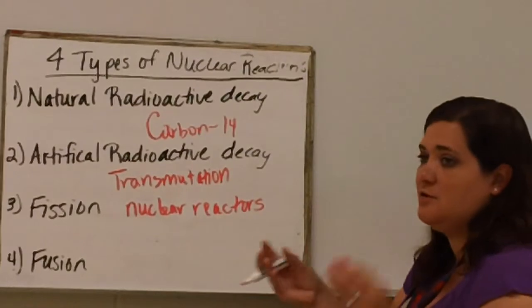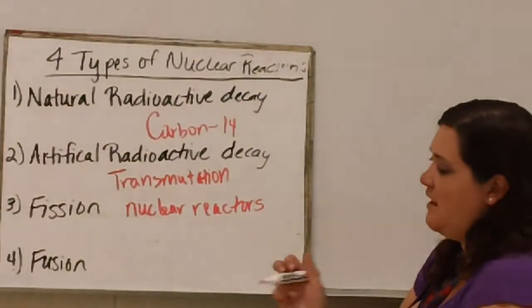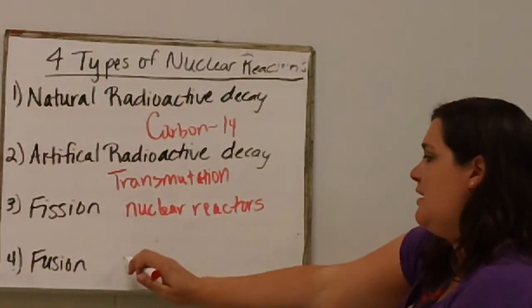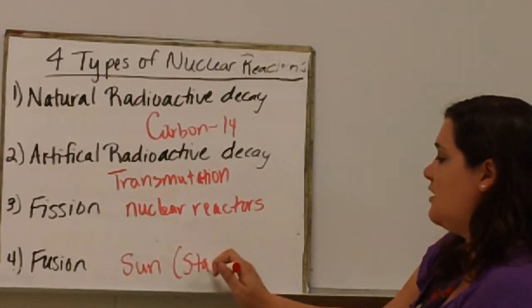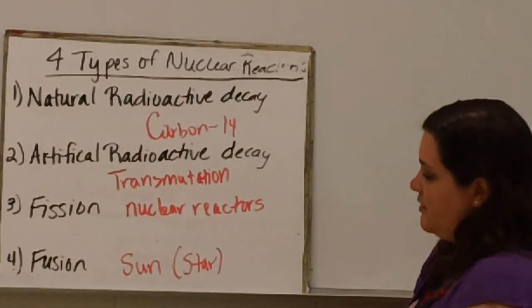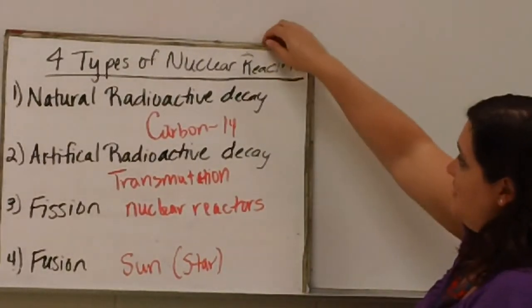And then fusion is when you take two smaller atoms and you fuse them together, making it a larger atom. And this occurs in the sun, which of course is a star, so it occurs in all stars. But important to us, our sun.